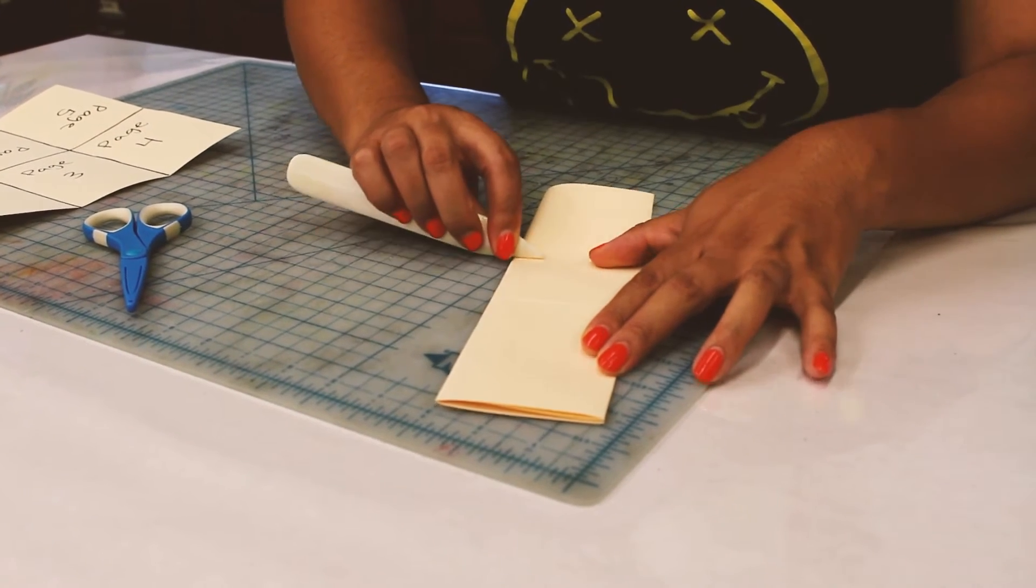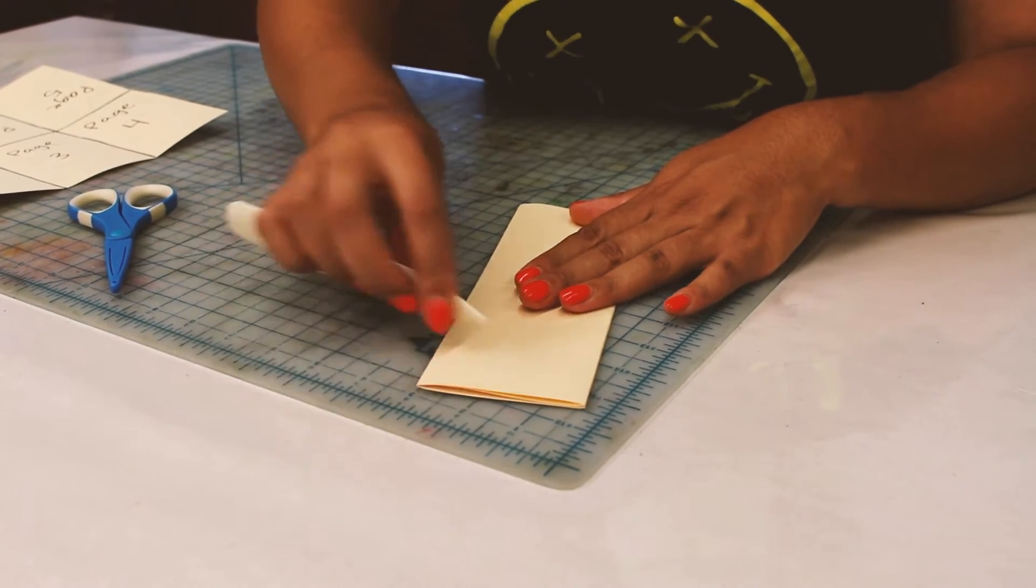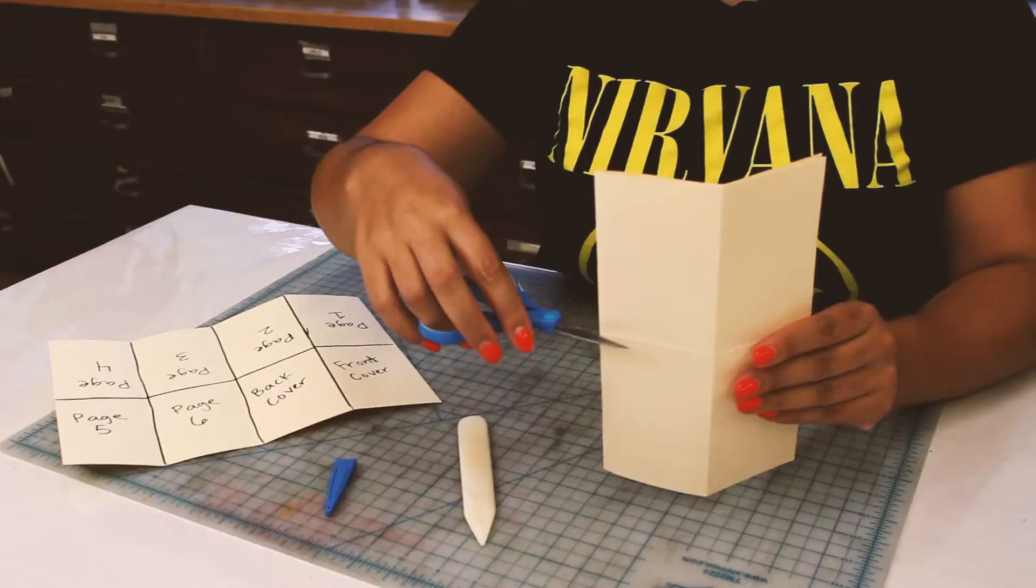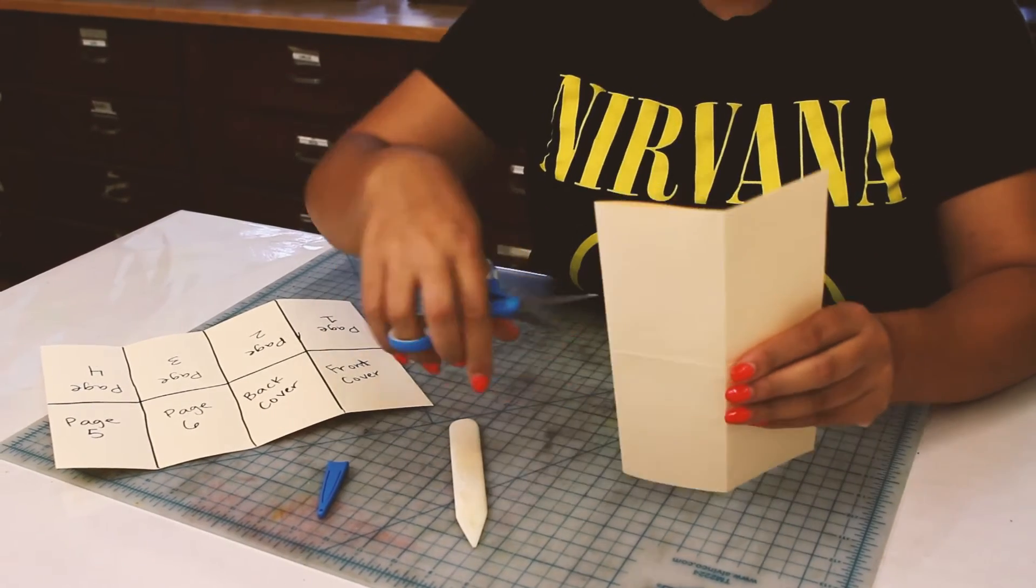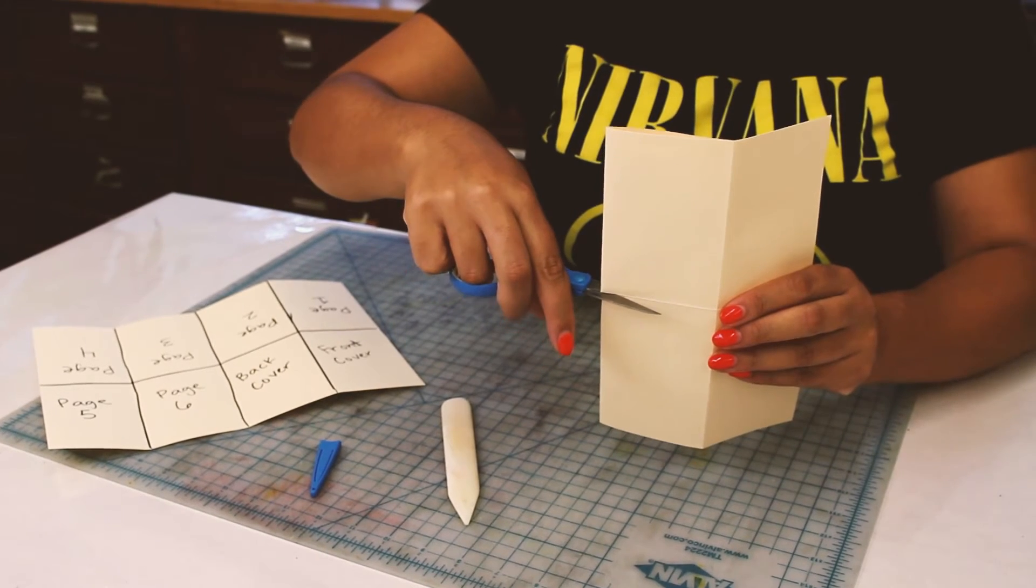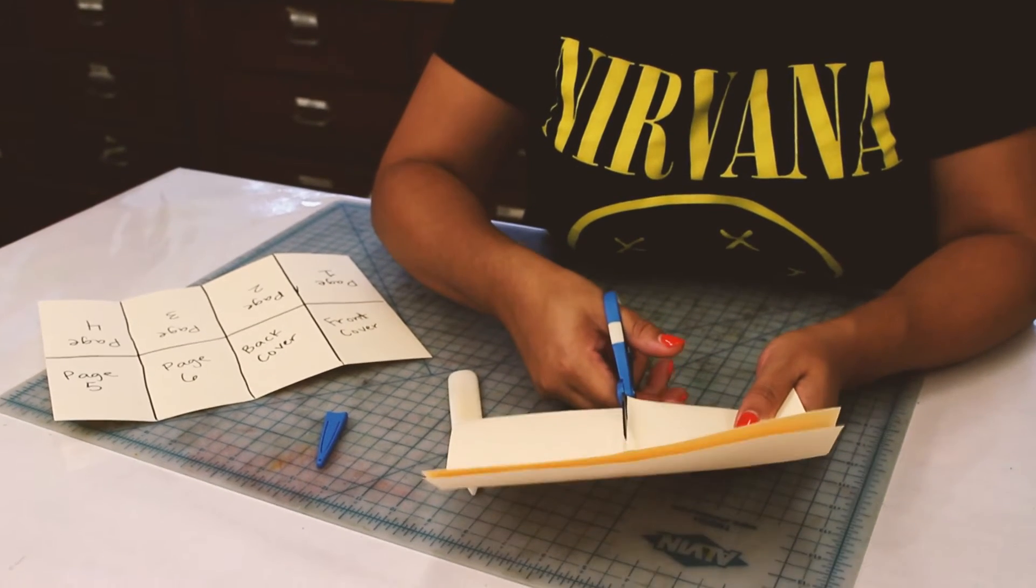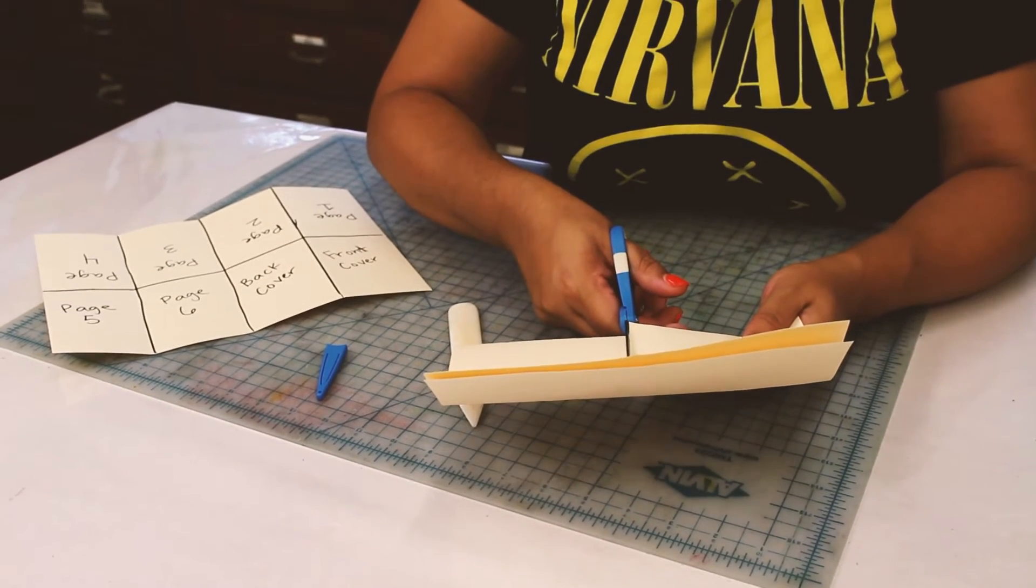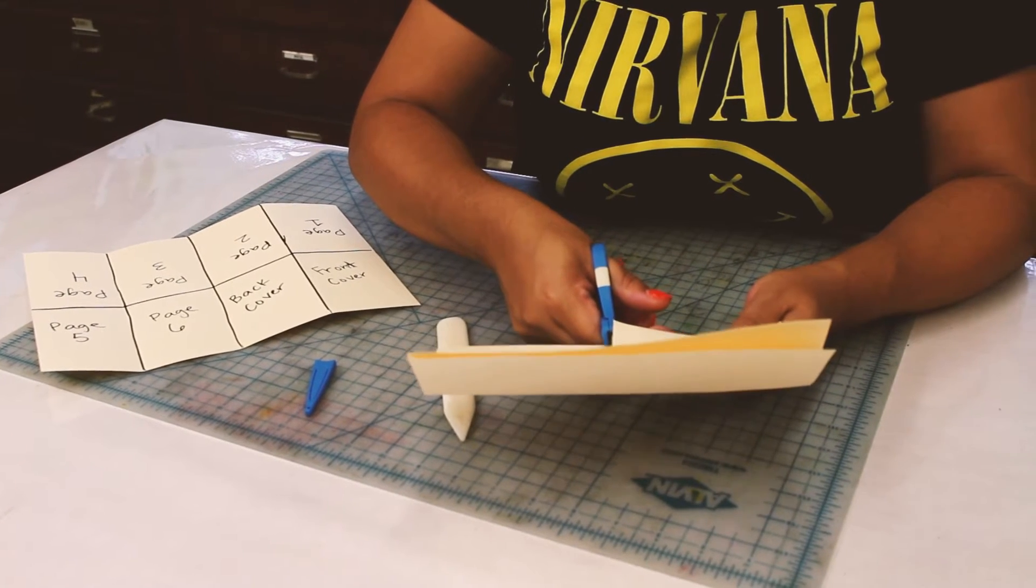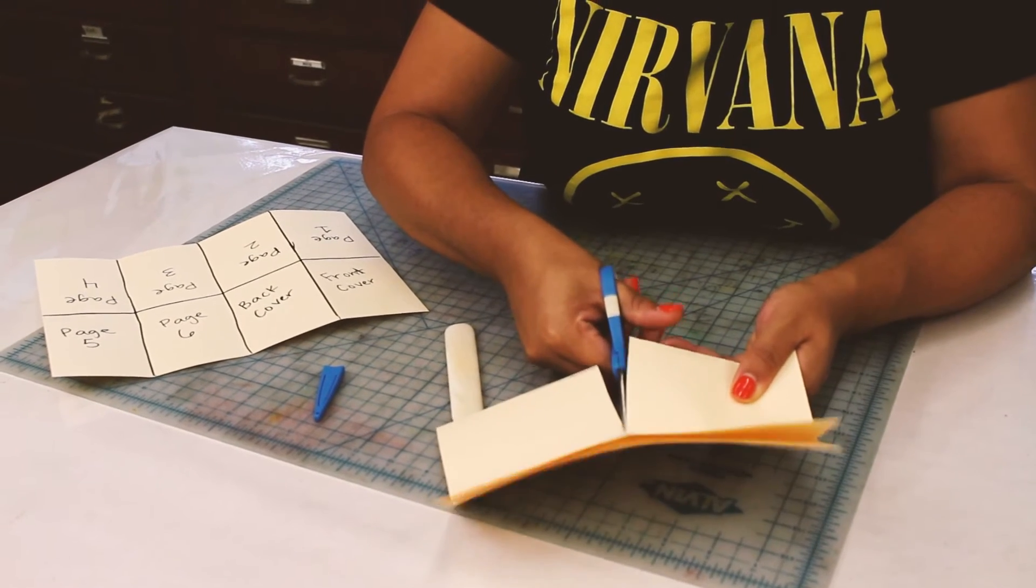And then we're going to take our scissors. And here one of the tricky things is making sure that you stay as close on top of that line as possible so that when you fold it it's not hanging over on either side. So we're really going to make sure that we follow that line and that crease that we put in there all the way to the middle.